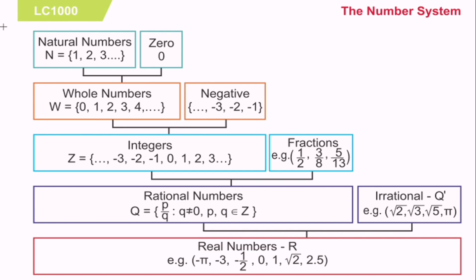So, what are rational numbers? A rational number is a number that is expressed as the ratio of two integers where the denominator should not be equal to zero. Whereas, an irrational number cannot be expressed in the form of fractions. Irrational numbers are terminating and repeating decimals.